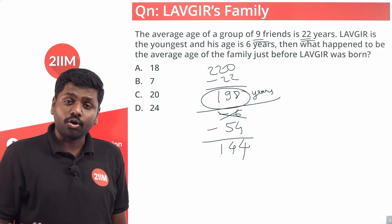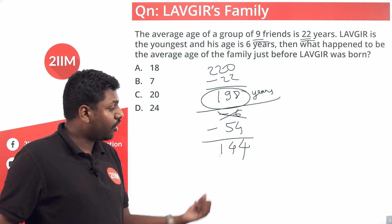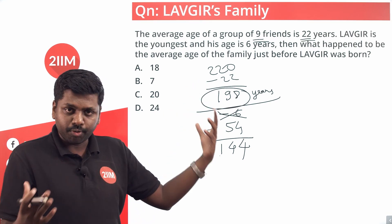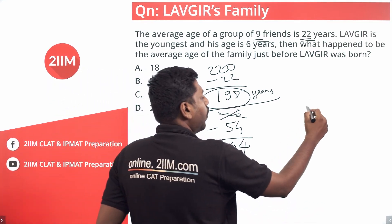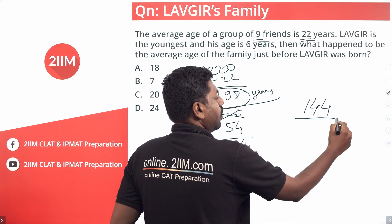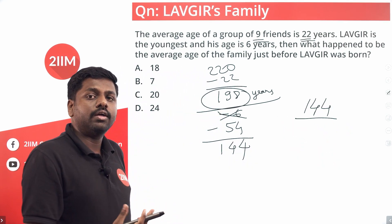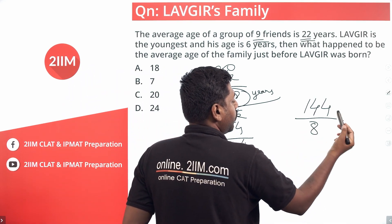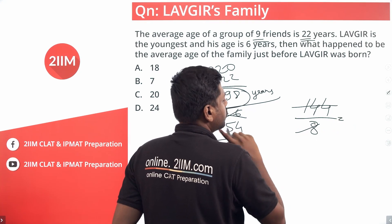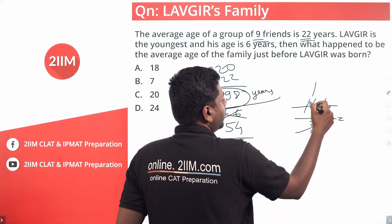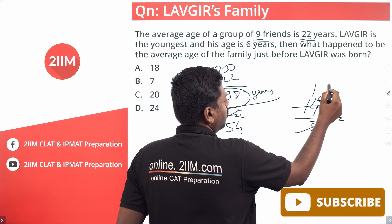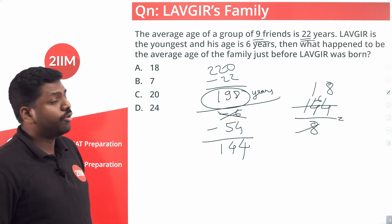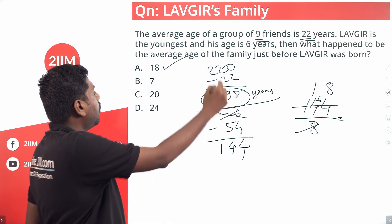198 minus 54 equals 144. So six years ago, before Lovegear was born, the total age of the group was 144 years across eight people. The average is 144 divided by 8, which equals 18. So 18 years should have been the average age of the group before the last kid was born. 18 is your answer.